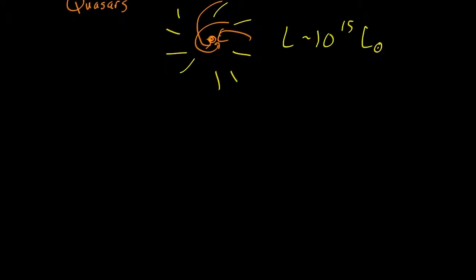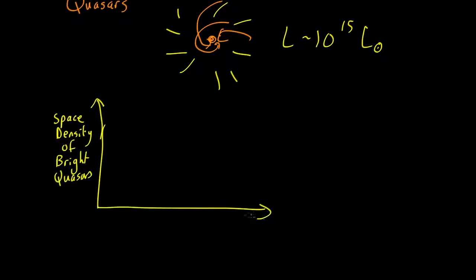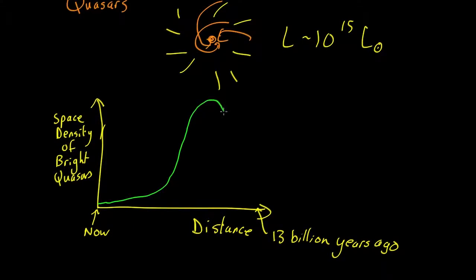And what people were doing back in the 60s was plotting the space density of bright quasars against distance, which corresponds to time. This is today. No distance means the light hasn't had to travel anywhere. And this might be 13 billion years in the past. And what they discovered was something quite remarkable. There actually aren't very many quasars around nowadays, at least not the bright ones. But as you go back in time, they get much more common. At red shift around two, there are about 2,000 times more quasars per unit volume than there are today. But then when you go further back, the numbers drop off.